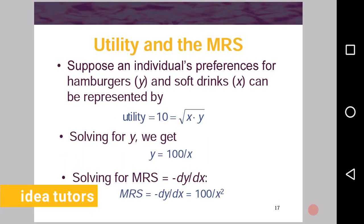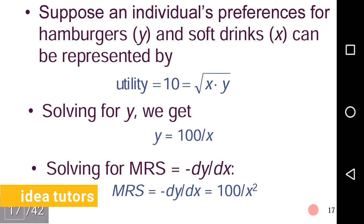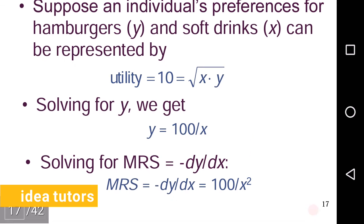Now, as we have learned about utility and MRS — which is the slope of the indifference curve — let's see how these two concepts are related. Suppose an individual's preferences for hamburgers (y) and soft drinks (x) can be represented by the utility function u = √(xy). Solving this equation for y: squaring both sides gives u² = xy, so y = 100/x. Now solving for MRS, since MRS = −dy/dx, we take the derivative of y with respect to x, which gives MRS = 100/x².